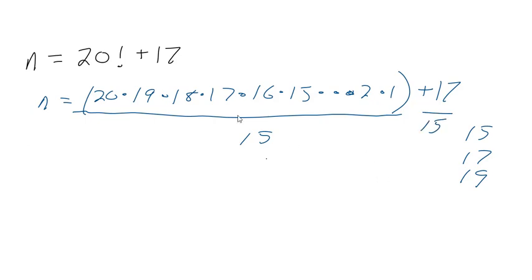Now you can see what's going on. 20 factorial divided by 15 — the 15s cancel. But 17 is not divisible by 15, so 15 is out.